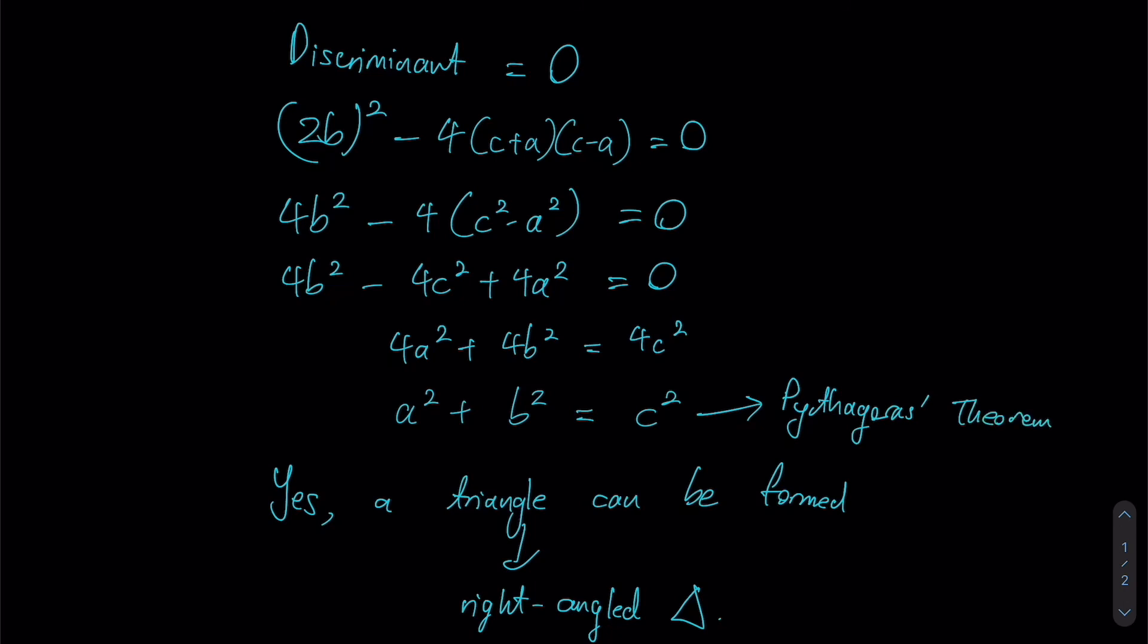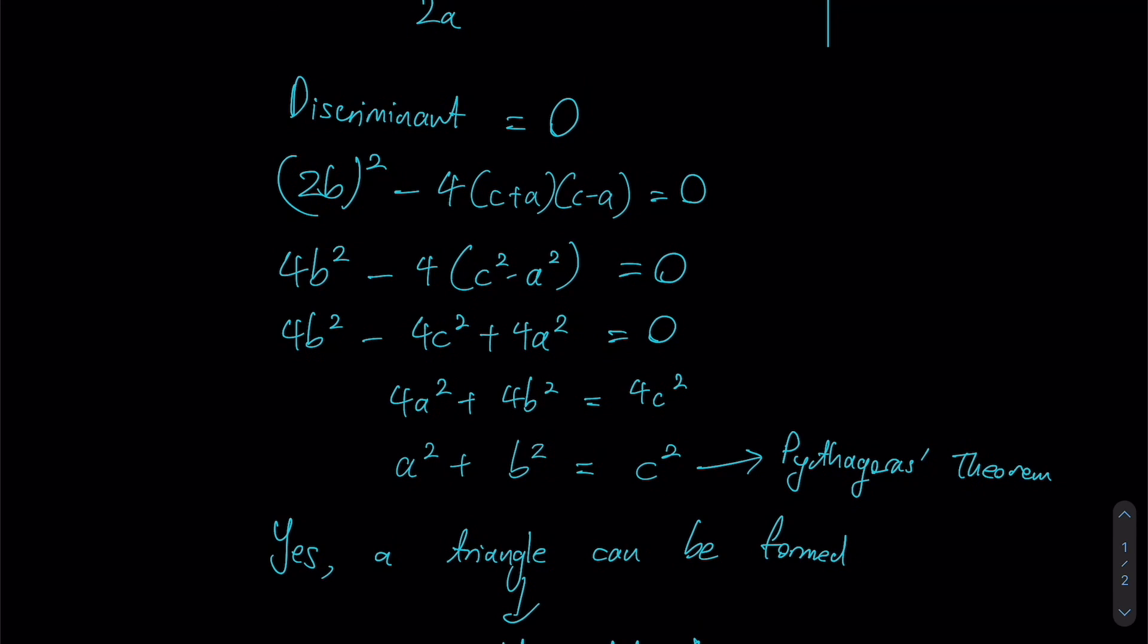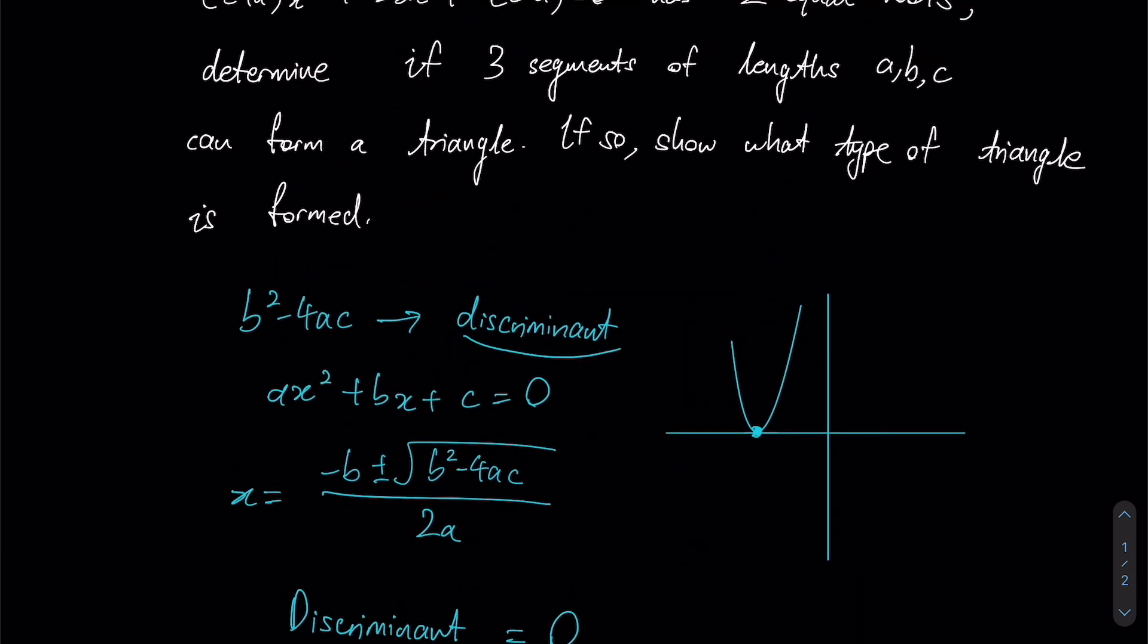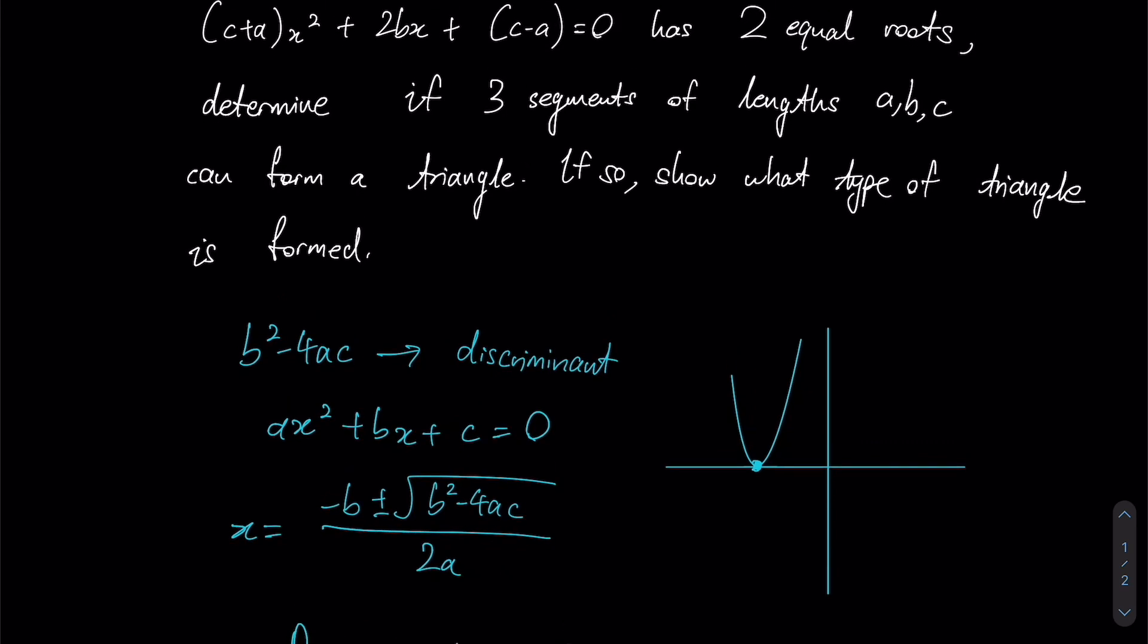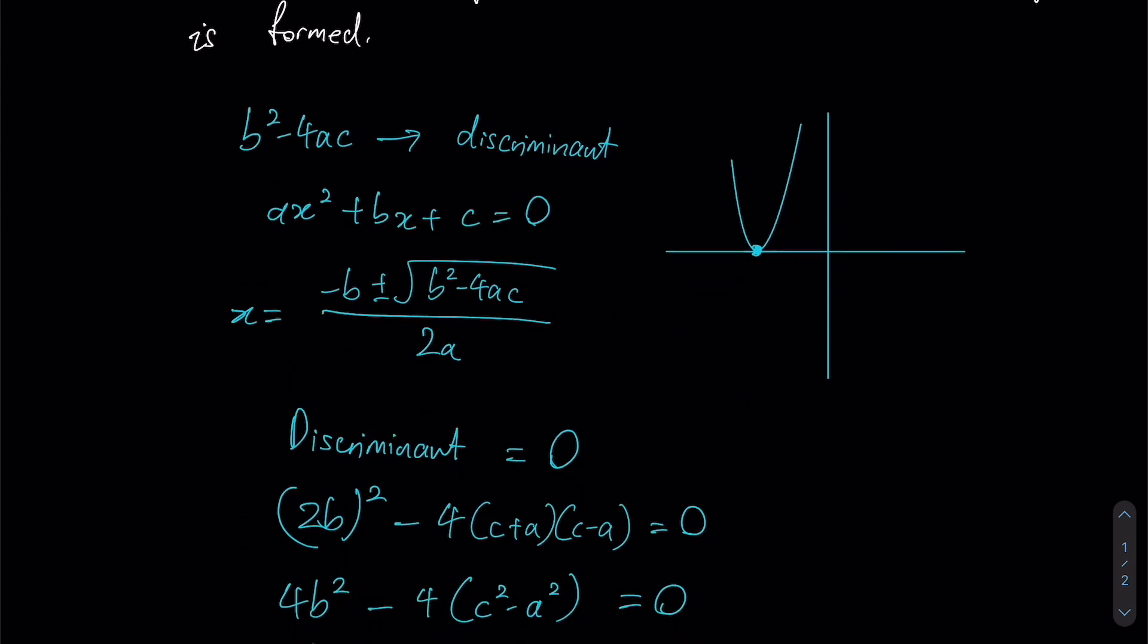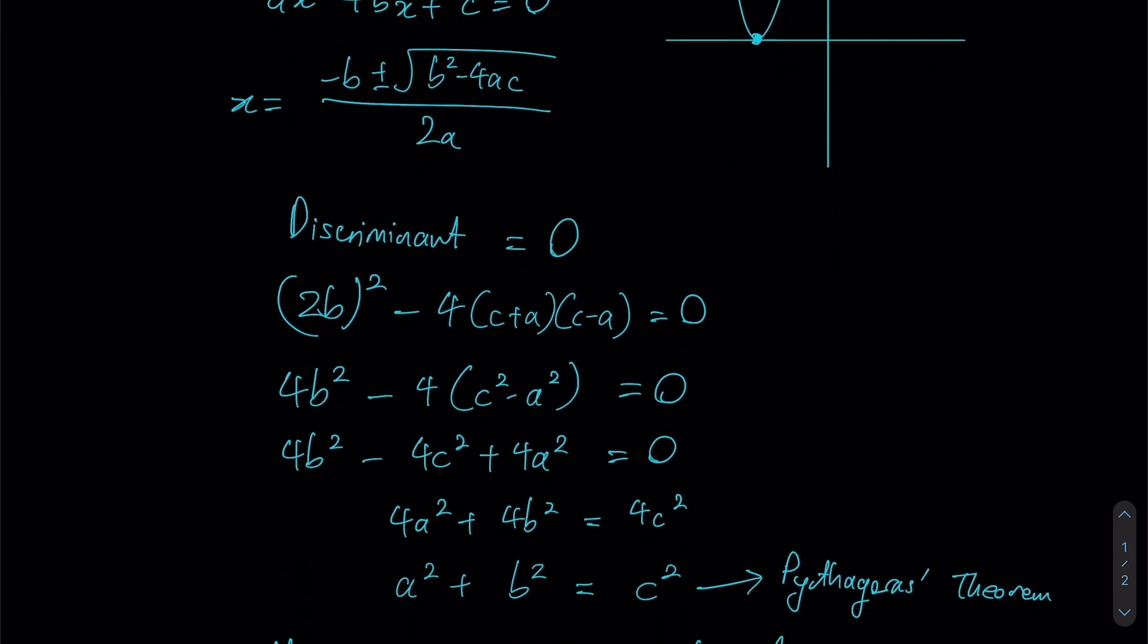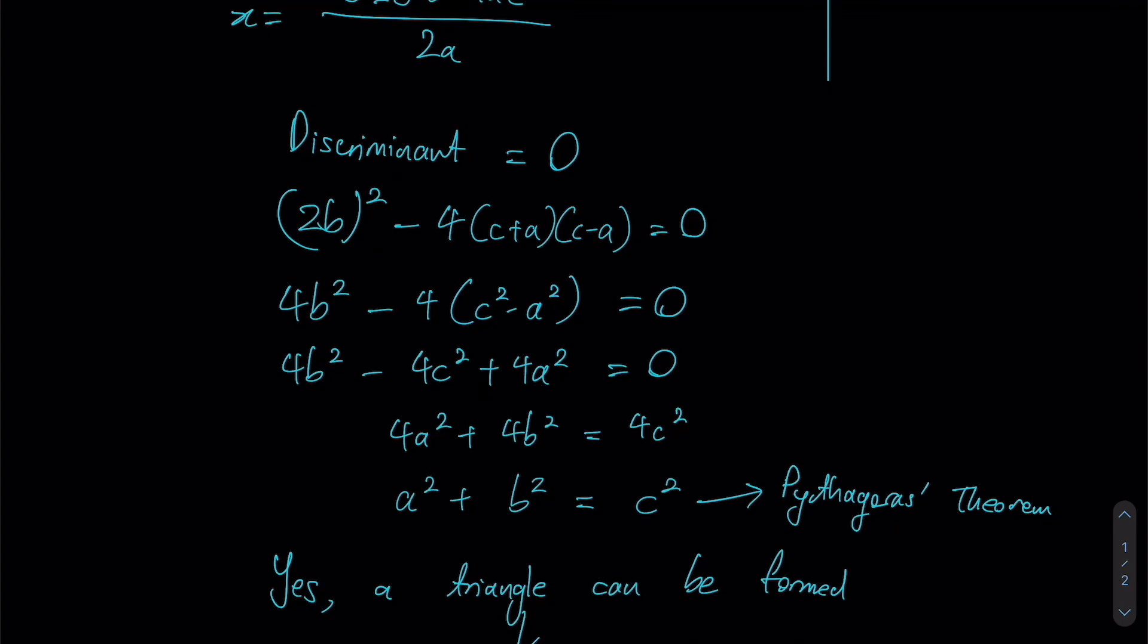We have shown that a triangle can be formed, and your triangle is actually a right angle triangle. For this question, we just need a basic understanding of how to use the discriminant to determine the nature of your roots for a quadratic equation, and then proceed to apply some basic identities such as difference of squares, and then just some simple manipulation to obtain this equation, which is actually just Pythagoras theorem.